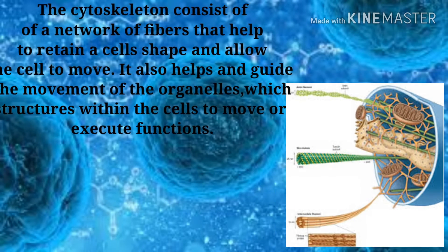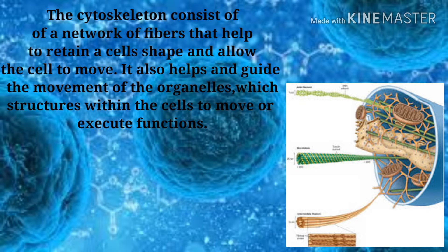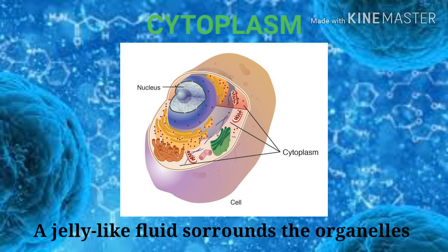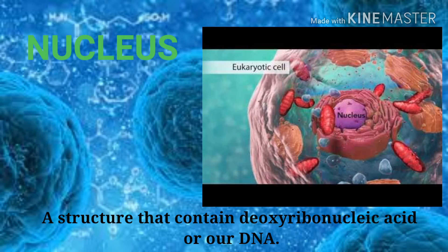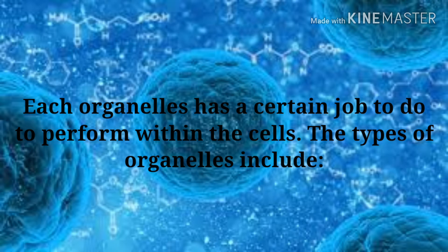The cytoskeleton consists of a network of fibers that help to retain a cell's shape and allow the cell to move. It also helps guide the movement of organelles — structures within a cell — to move or execute certain functions. The cytoplasm is a jelly-like fluid that surrounds the organelles, and the cell nucleus is a structure that contains the deoxyribonucleic acid, or DNA.